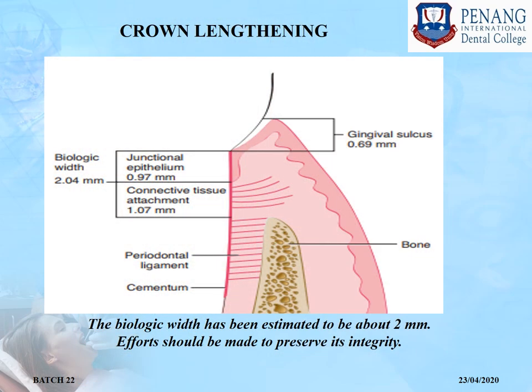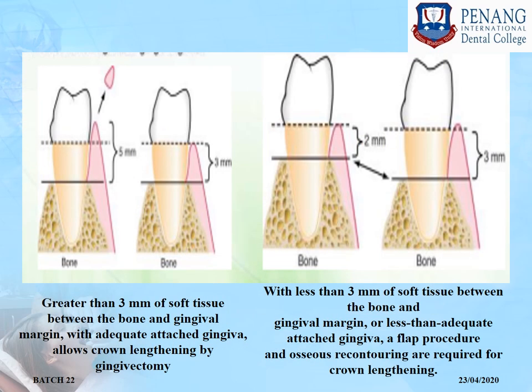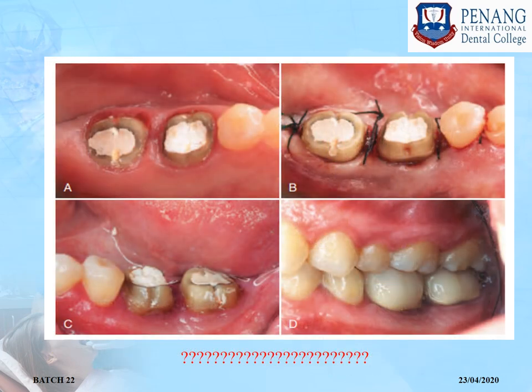Now comes crown lengthening. Crown lengthening may be required for problems such as inadequate amount of tooth structure for proper restorative therapy, subgingival location of fracture lines, or subgingival location of carious lesions. Techniques used include an apically positioned flap, with or without ostectomy. While performing crown lengthening, the integrity of biological width — the total sum of junctional epithelium and connective tissue attachment — must be maintained. In cases where probing depth was less than 3 mm, flap procedures with osseous contouring are performed.